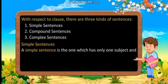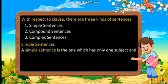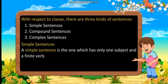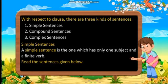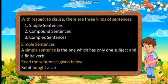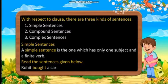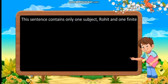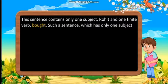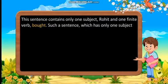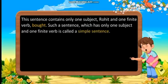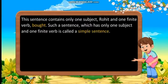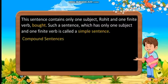Let's learn simple sentences. A simple sentence is the one which has only one subject and a finite verb. Read the sentences given below. 'Rahit bought a car.' This sentence contains only one subject — Rahit — and one finite verb — bought. Such a sentence which has only one subject and one finite verb is called a simple sentence.